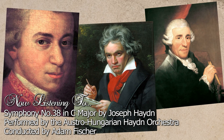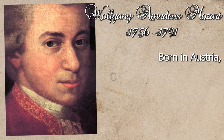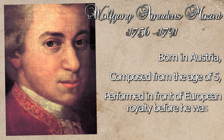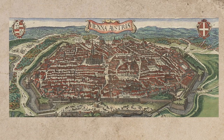Key to the classical movement were three composers: Mozart, Beethoven, and Haydn. Born in Austria, Mozart was composing from the age of five; by 17 he had performed in front of European royalty and was engaged as a court musician in Salzburg. In 1781, Mozart moved to Vienna, which would become the center of the classical music movement. It was here that he befriended Haydn and Beethoven.